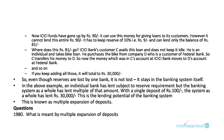Now where does this 81 rupees go? ICICI Bank customer C avails this loan as a bike loan. He purchases the bike from company D, who is a customer of Federal Bank. So C transfers his money to D, and the money moves from C's account at ICICI Bank to D's account at Federal Bank, and so on.